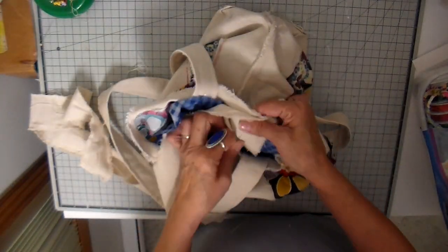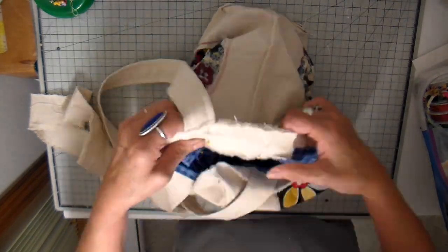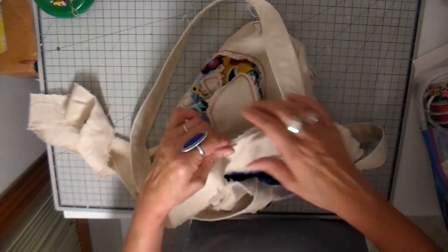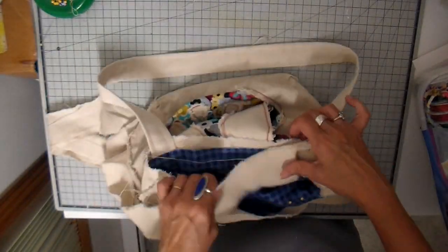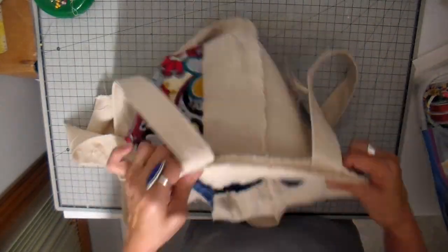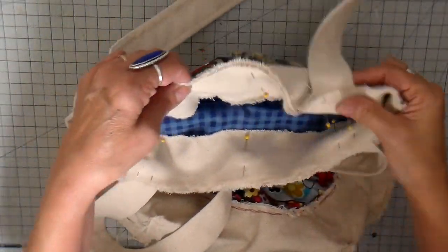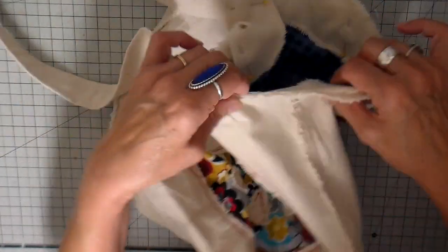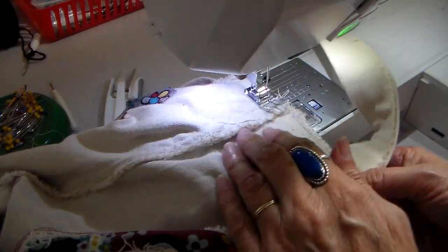Now for that facing, this facing is going to cover up that lining and also those straps. That was a piece that I tore at two inches and the raw edges are going to meet the raw edges of my tote. Again just pinning everything into place and here's what it looks like all pinned. I'm going to take this to my sewing machine now and I'm going to top stitch.